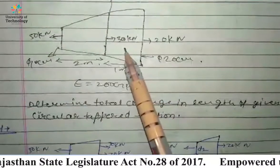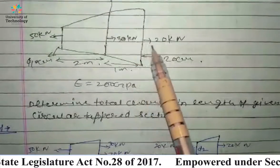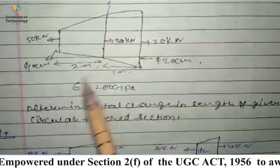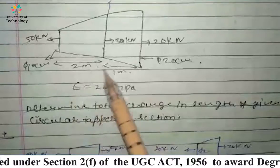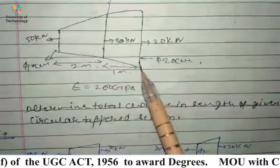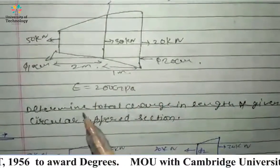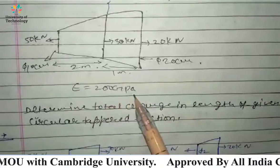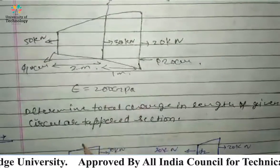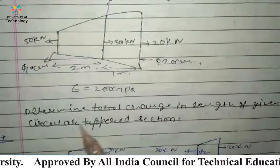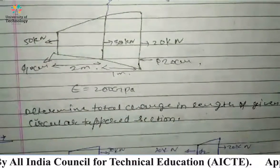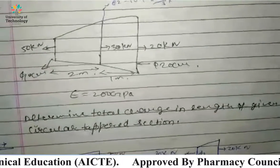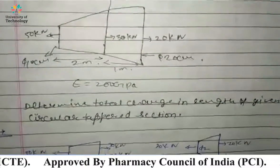The other loads applied are 20 kN and 30 kN. The length of this tapered section is 2 meters and the other part is 1 meter. The Young's modulus of this tapered section is 200 GPa. The numerical asks us to determine the total change in the length of the given circular tapered section.